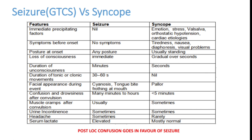Muscle cramps are usually seen in seizure and not in syncope. Urinary incontinence is mostly seen in seizure and not in syncope. Headache is very common after seizure activity but not seen in syncope patients — though rarely, migraine patients can have syncope-like features with headache.